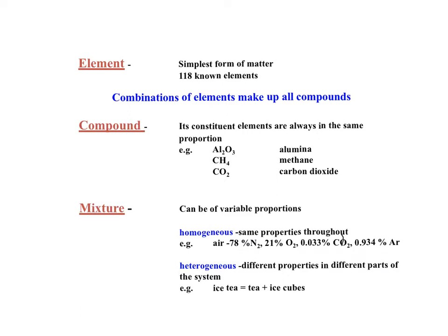Combinations of elements make up compounds. Here are three examples. The first is called alumina — the common name — with the proper chemical name aluminum oxide, Al₂O₃. For every molecule, you have two atoms of aluminum and three atoms of oxygen. The ratio is always the same within the compound, regardless of how much you have — a two-to-three ratio. Methane is another compound with carbon and hydrogen: always four hydrogens for every one carbon. Carbon dioxide has two oxygens for one carbon.